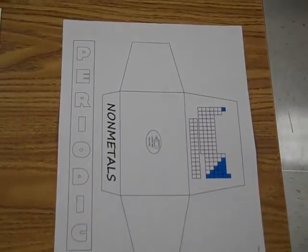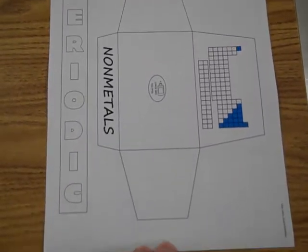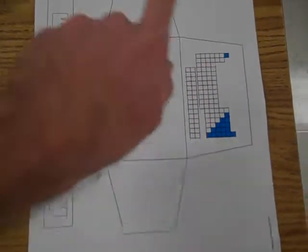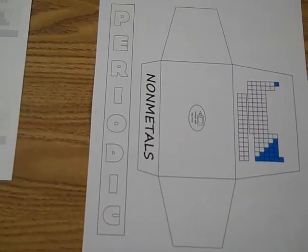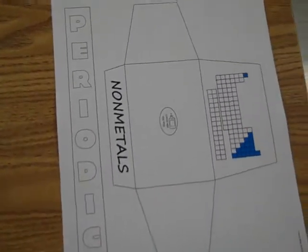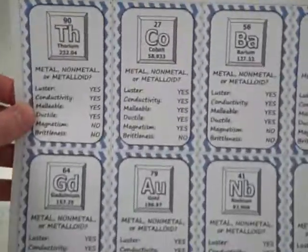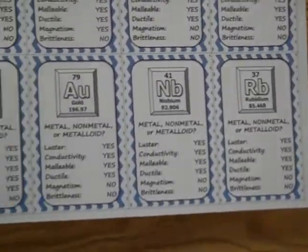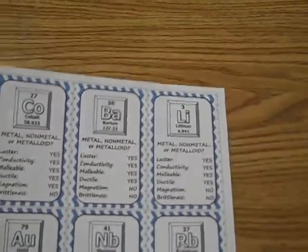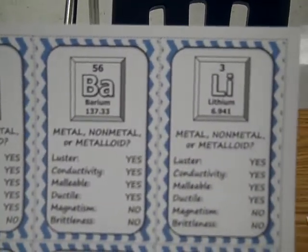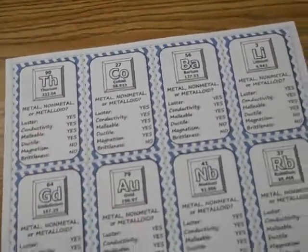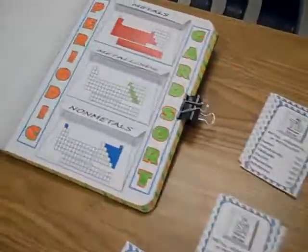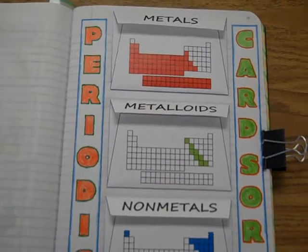The envelopes and title strips are printed on regular copy paper — you just trim, cut it out, color it, and then glue or tape it into the journal. The cards use cardstock, which is the best thing to use for card sorts. That way you can't look through the card and see the answer on the other side, and they're more durable. So that's the metals, metalloids, and non-metals card sort.